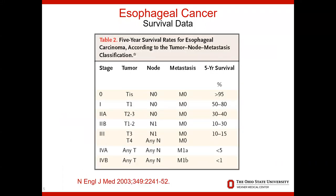This graph depicts the breakdown of the staging system for esophageal cancer. Survival is directly linked to the clinical stage. Patients with early stage esophageal cancer, such as stage 0 to stage 1, have a much better overall survival compared to patients with locally advanced disease, such as stage 2a to stage 3, and also compared to patients with stage 4 disease where the cancer has spread to other parts of the body.